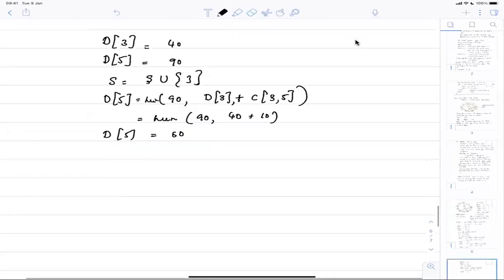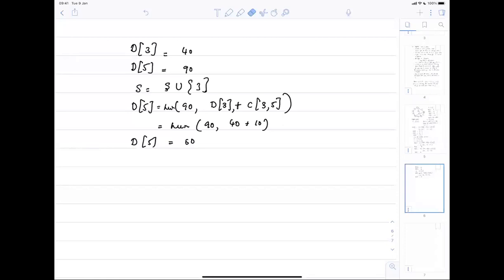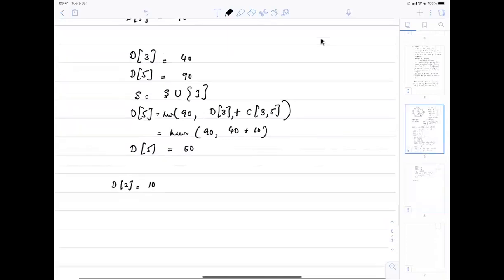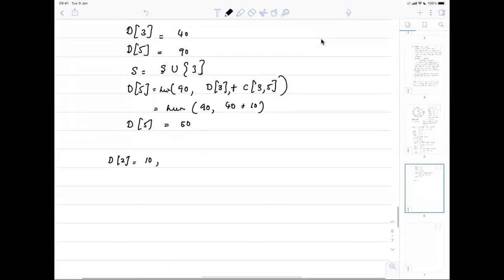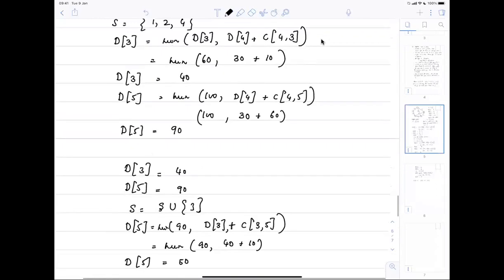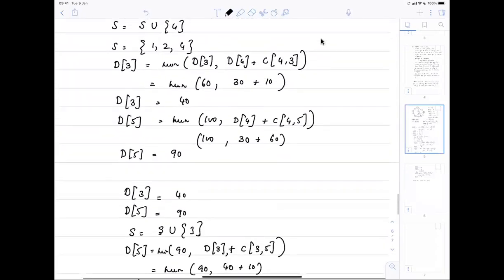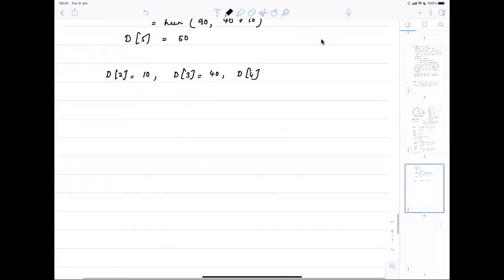What do we have now? If you look at the distances, we got D of 2 equal to 10, D of 3 is 40, D of 4 is 30, and D of 5 is 50.